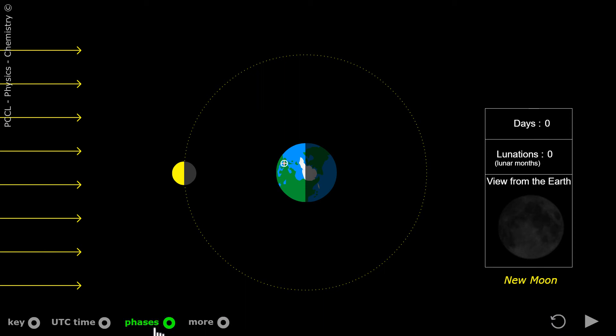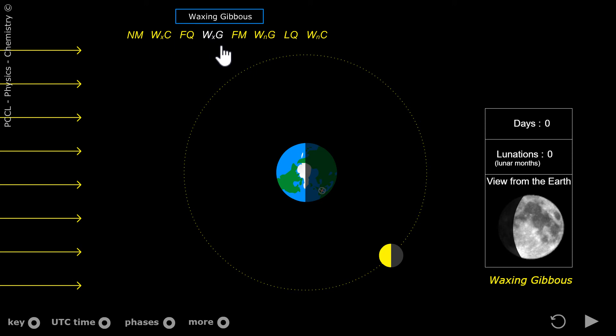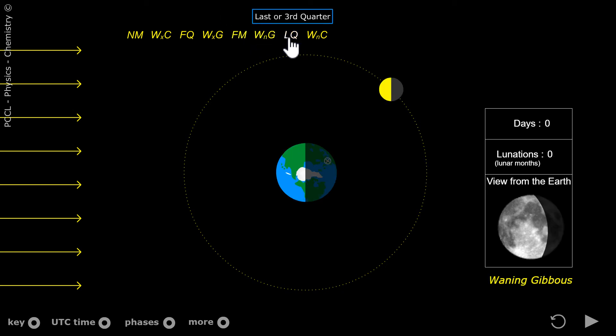I show you each phase again with its name: New moon, Waxing crescent, First quarter, Waxing gibbous, Full moon, Waning gibbous, Last or third quarter, Waning crescent.